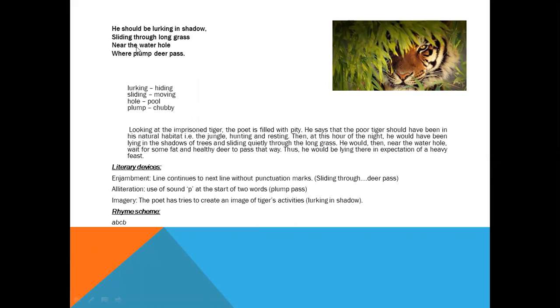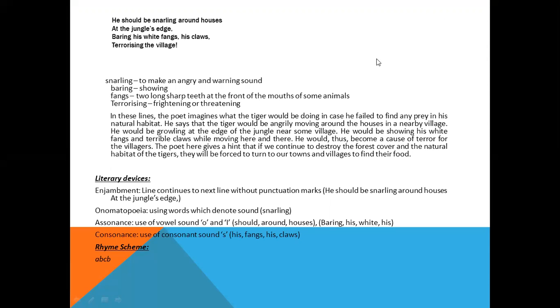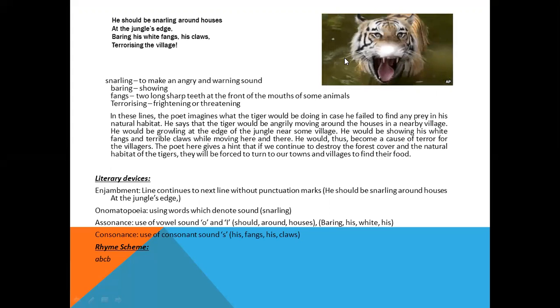As you can see that sliding through the grass, long grass near the water hole where the plump deer pass, this line starts from here and it ends here. So line continues to the next line without punctuation marks. It is known as enjambment. And here you can find out another plump, plump pass, P P sound is alliteration and imagery. Lurking in shadow, you can imagine this picture in your mind, so it is imagery.